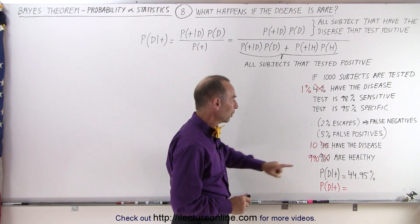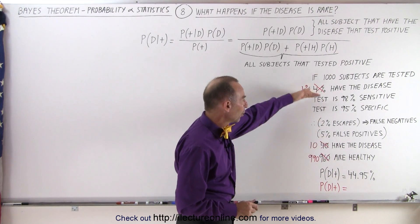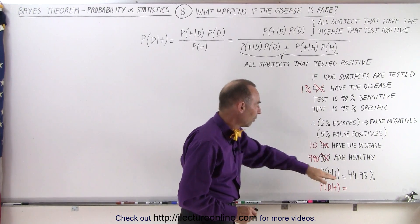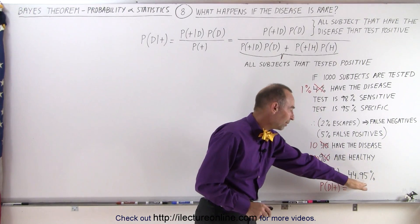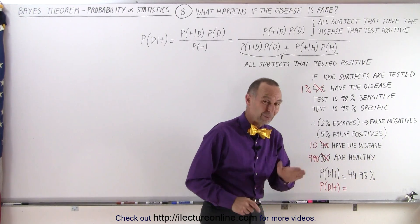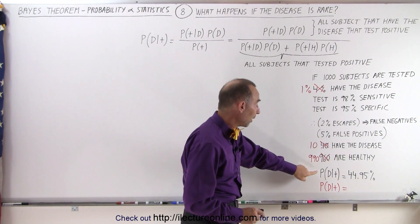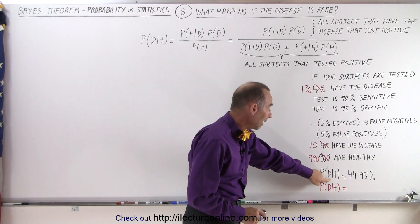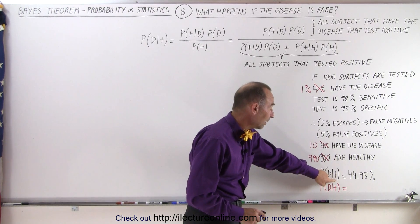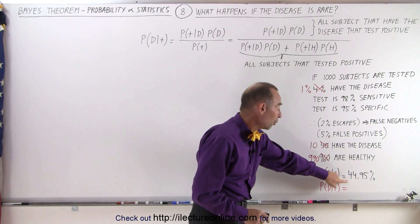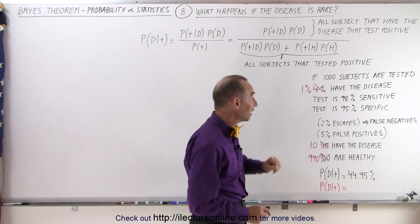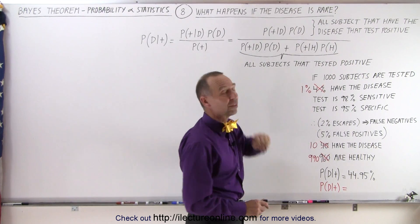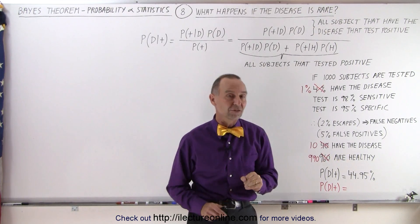Remember, when there were 40 that had the disease with test parameters like this, 44.95% — what did that mean? It meant that the probability that someone did have the disease when they tested positive was 44.95%, if there were 40 out of a thousand that had the disease.